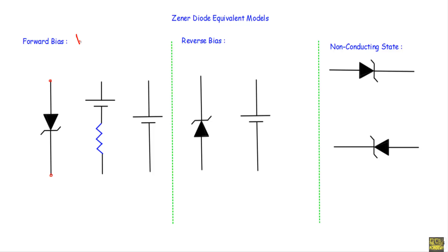Let's say I have a variable voltage source V. If I connect the positive terminal of voltage source V with the P side of the Zener diode and the negative terminal with the N side, and keep increasing the voltage V, initially there will not be any current flow because every Zener diode has a built-in potential which will oppose the applied voltage. Therefore, if the magnitude of the applied voltage is greater than the built-in potential, the Zener diode will be in forward bias.